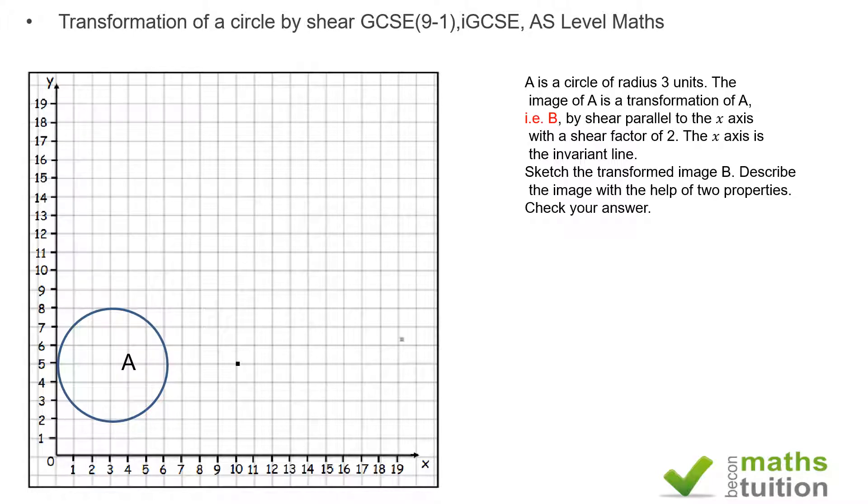Next we look at this point here, the end of the diameter. The distance from the invariant point to that point here is 1, 2, 3, 4, 5, so I expect a displacement of 10 units again, and that's there.